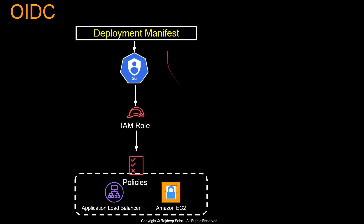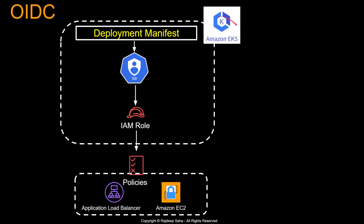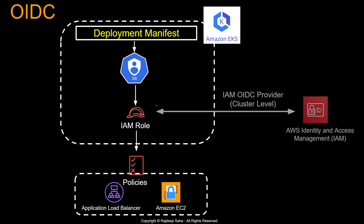However, all this deployment manifest and service account is running within Amazon EKS. So this service account and IAM role needs to have a way to communicate with the AWS IAM service to validate what policies you have and whether you have proper temporary credentials or not. To do that, we have the IAM OIDC provider. This is cluster level — you set it up one time and then you are good to go.